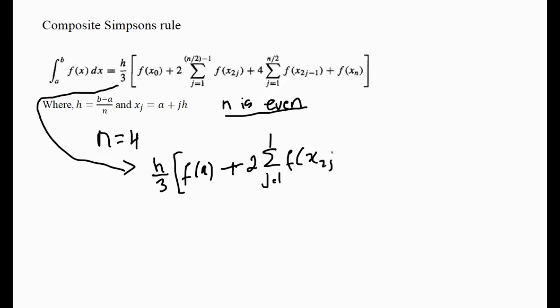And then we have plus 4 times summation j equals 1 to 2, and that's going to be f(x_{2j-1}), and plus our x_n, which is b. Just for reference, remember x_0 is a—the starting point—and x_n is b.